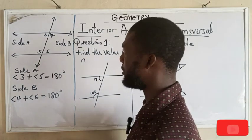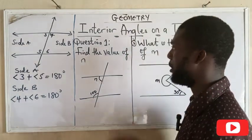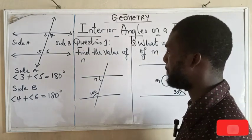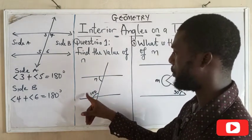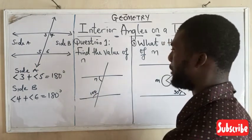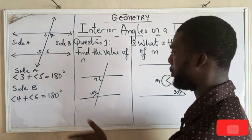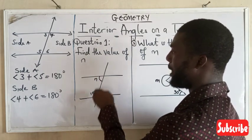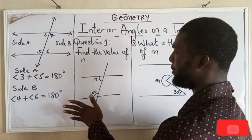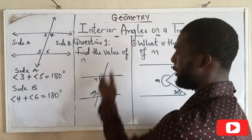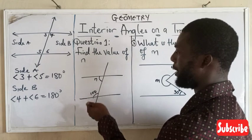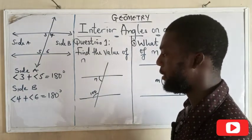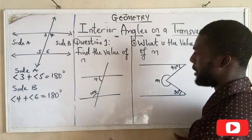So let's quickly look at the question here. Question one says that we should find the value of n. As you can see this is 100 and this is n. From what I've explained earlier, I said that two angles on the same side of a transversal—this is the transversal line that cuts—so two angles on the same side of a transversal equals 180 or it is supplementary.